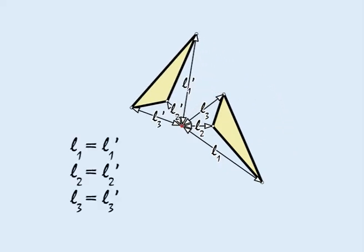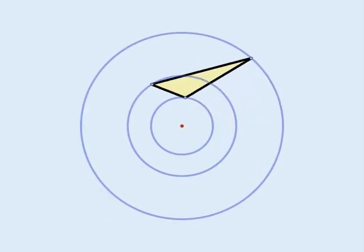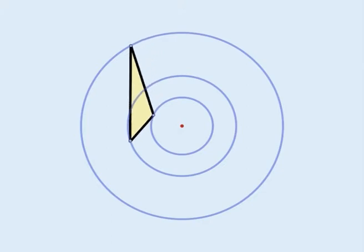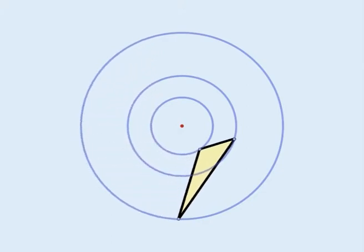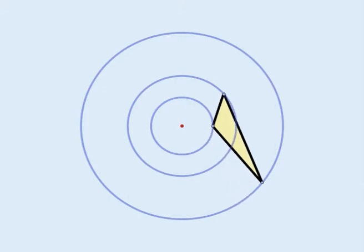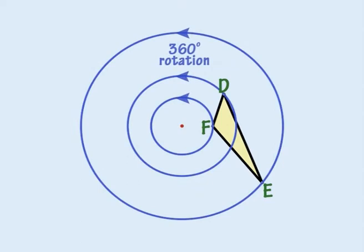Rotation leaves the distance from any point on the shape to the centre unchanged. As a consequence, if a shape is rotated 360 degrees or one full rotation, any point on the shape will trace a circle. So the vertices of this triangle trace three concentric circles as it is rotated 360 degrees.